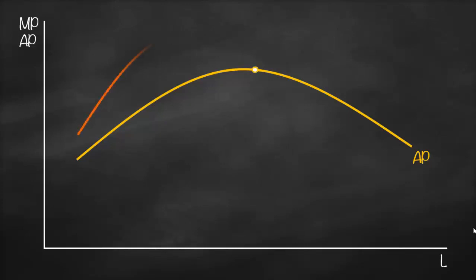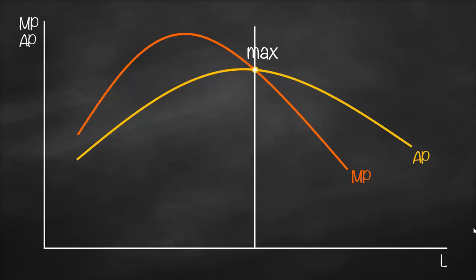When we draw our marginal product, it will intersect with average product at its maximum point. From this graph we can derive some relationships. Marginal product will be equal to average product when average product is at its maximum point — therefore both values will be the same.